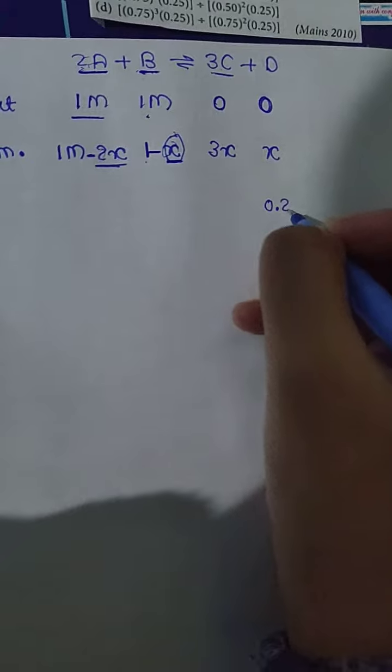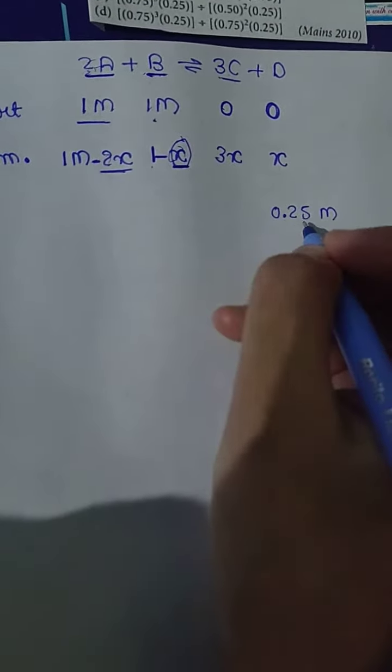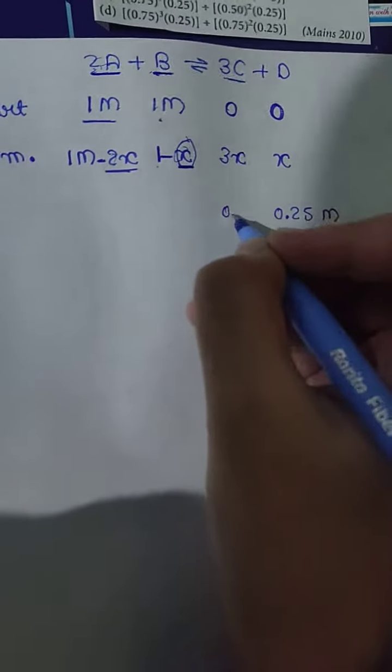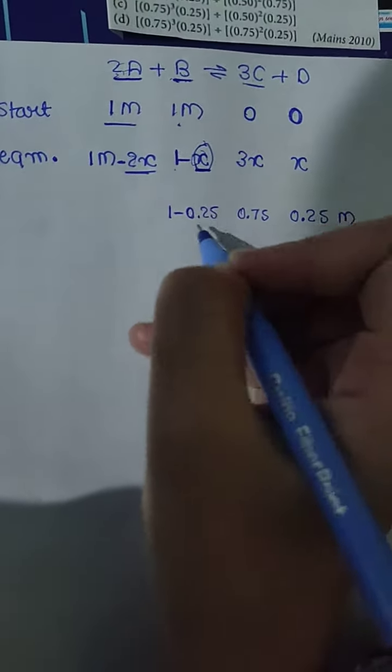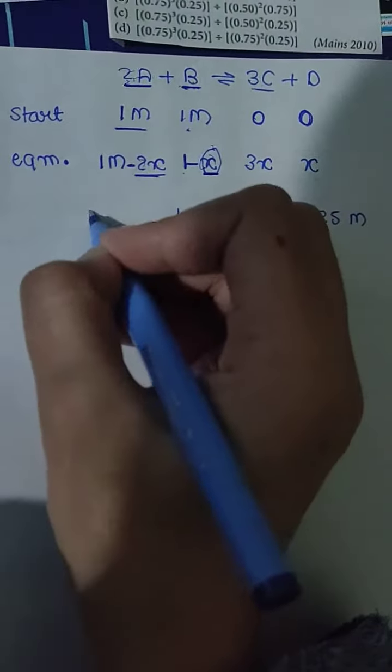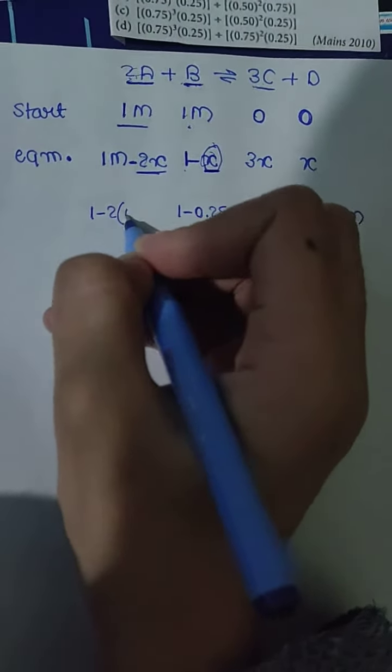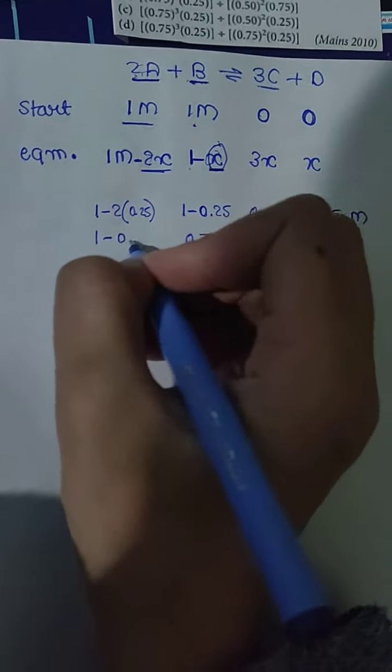This gives us 3 times 0.25 equals 0.75 molar for C. For B, 1 minus x equals 1 minus 0.25 equals 0.75. For A, 1 minus 2 times 0.25 is 1 minus 0.50, which equals 0.50.